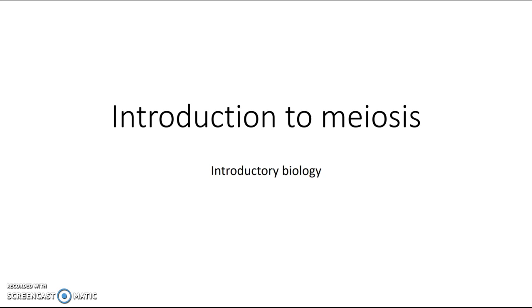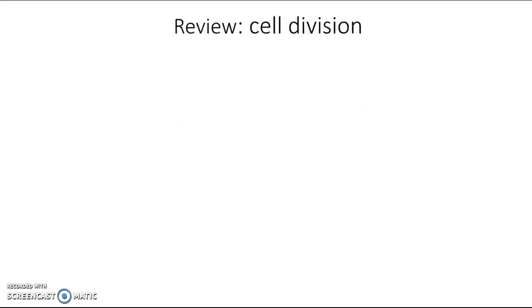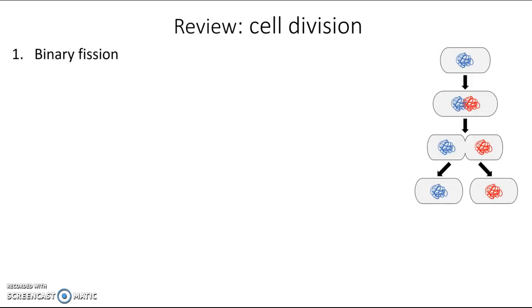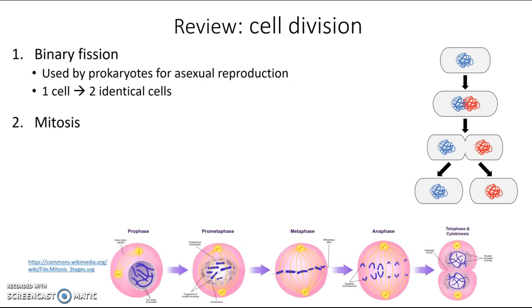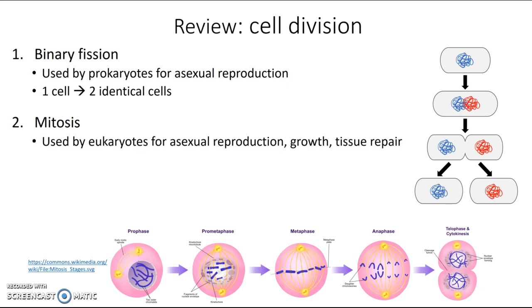Let's start with a quick review of cell division. We've already learned about a couple types. The first was binary fission, used by prokaryotes for asexual reproduction, where one parent cell gave rise to two identical daughter cells. The next process was mitosis, used by eukaryotes for asexual reproduction, growth, and tissue repair. And just like in binary fission, one parent cell gave rise to two identical daughter cells.